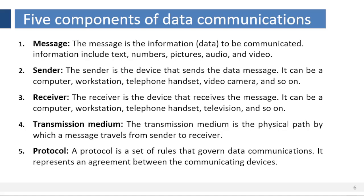Now let us see what are the five components that make up a data communications system. First, message — the message is the information to be communicated. Popular forms of information include text, numbers, pictures, audio, and video. Second, sender — the sender is the device that sends the data message. It can be a computer, workstation, telephone handset, video camera, and so on.